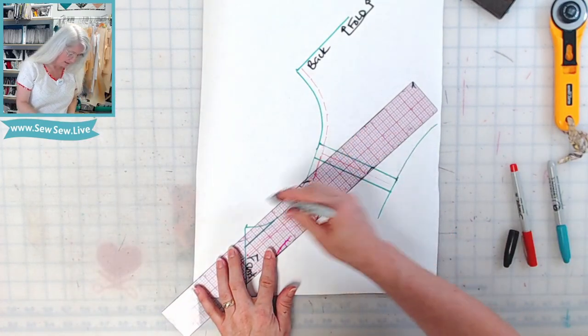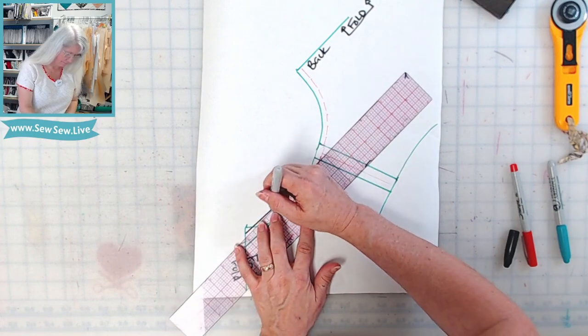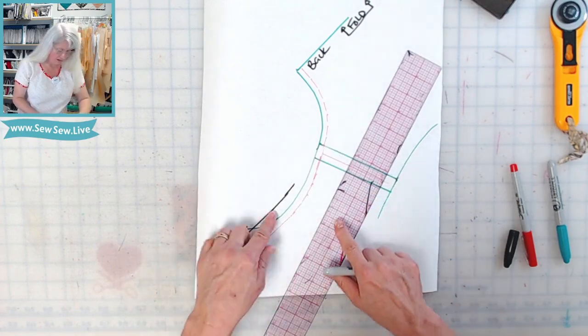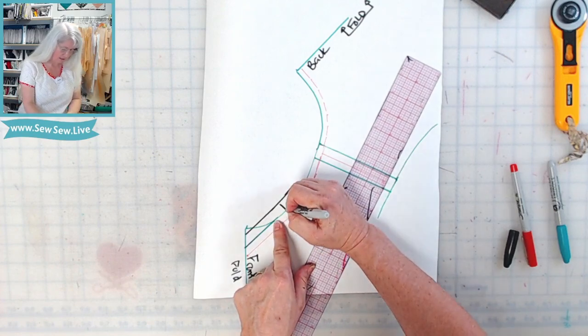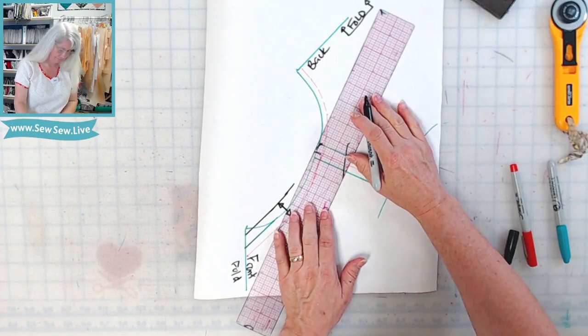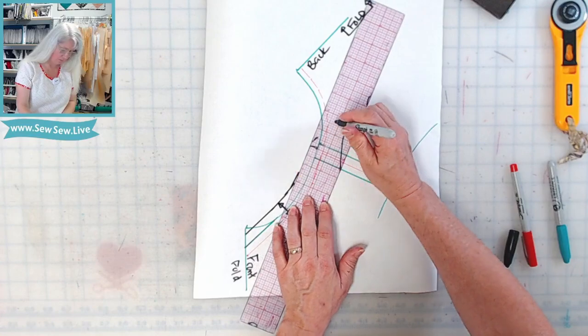So the next thing we're going to do is we're going to draw in our neckband. So mine's going to be 7/8 of an inch wide. And I'm doing a parallel line to my seam line here, so from here to here. So I'm just drawing in the width that I want.